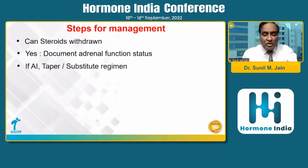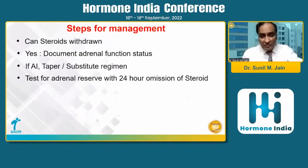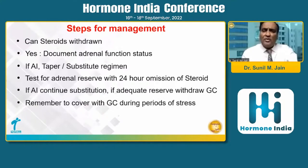We have to slowly withdraw the steroid. Once we reach a lower dose, we can make it alternate day. Now we have to document that the patient has adequate adrenal reserve — for that, we omit steroids for 24 hours and then do the test. If the adrenal reserve is sufficient, we can withdraw glucocorticoids, but we must remember that for the next one year we have to give a short course of glucocorticoid during periods of stress.